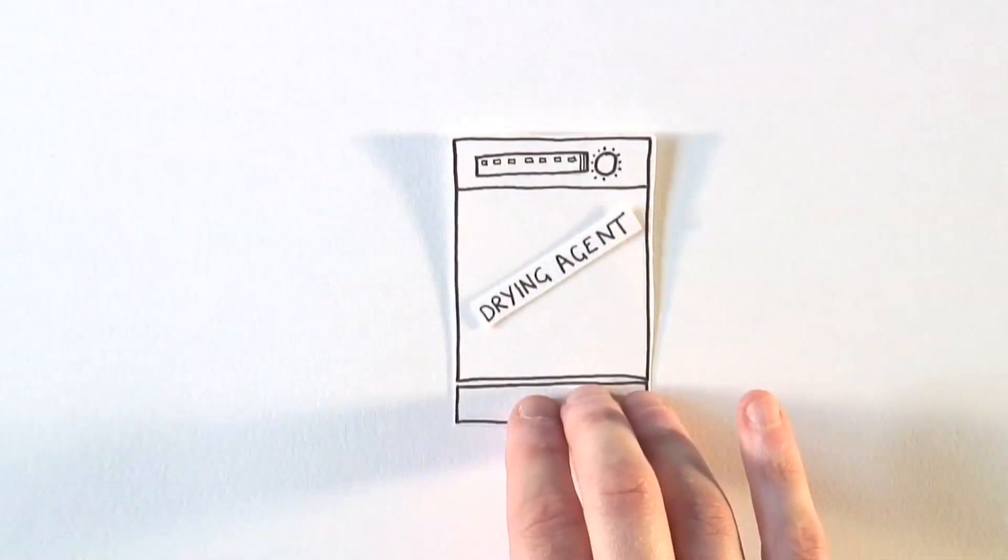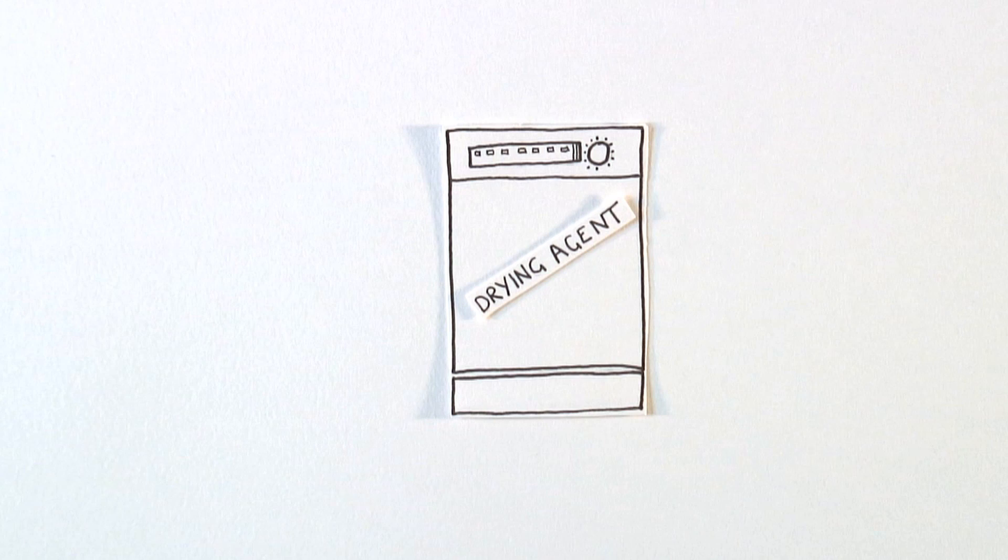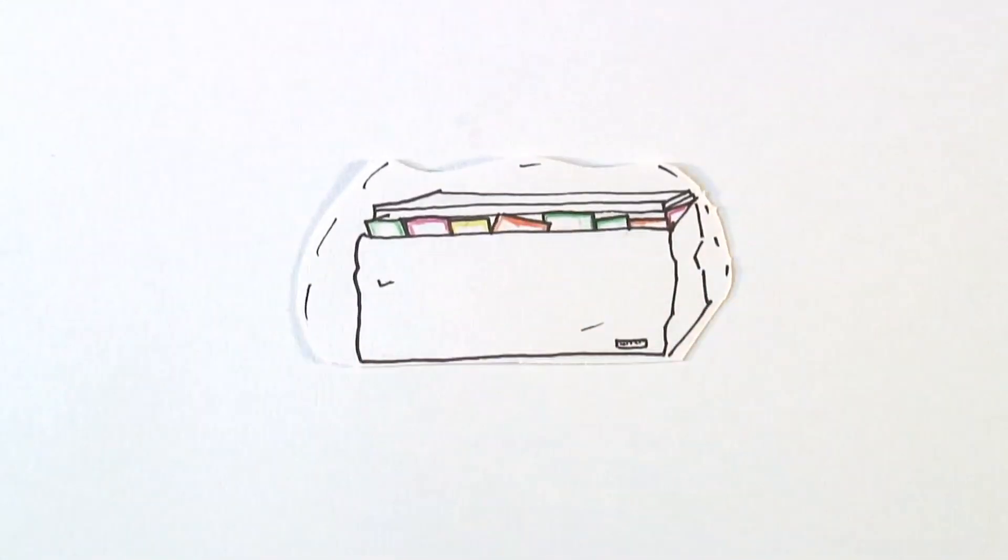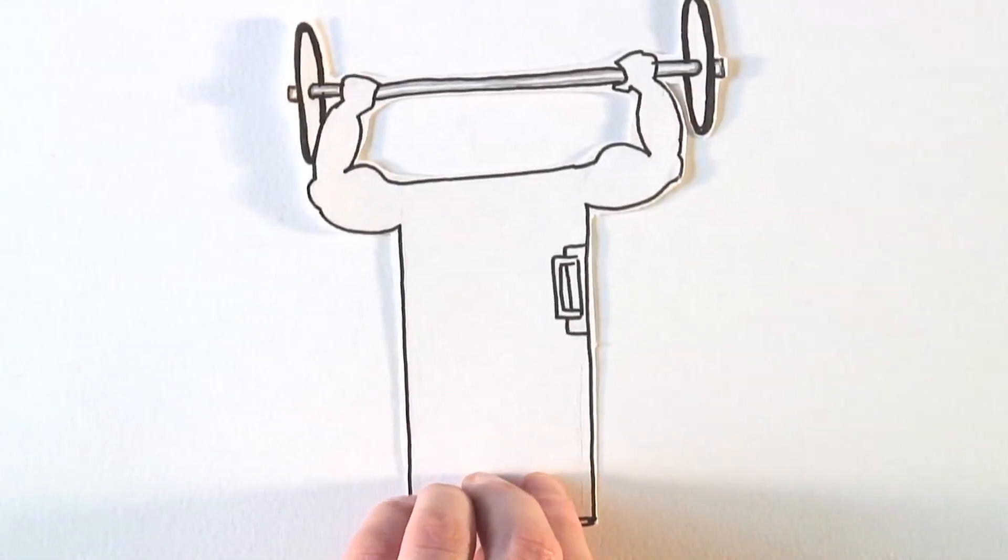When using your dishwasher, try using a drying agent instead of using the dry cycle. Always keep your freezer packed full. Empty space in your refrigerator and freezer makes your fridge work really hard.